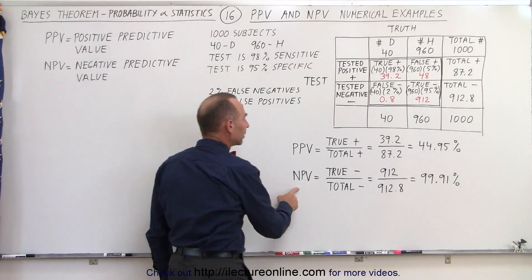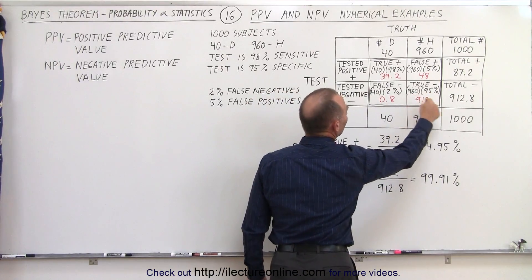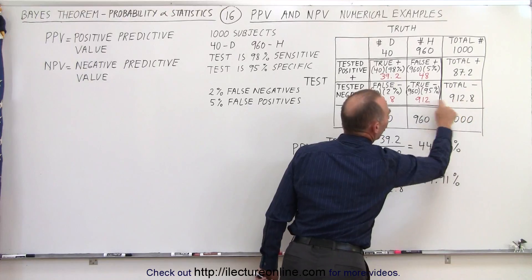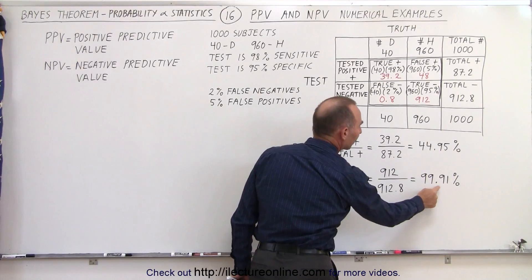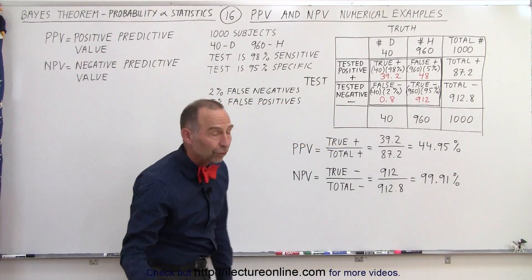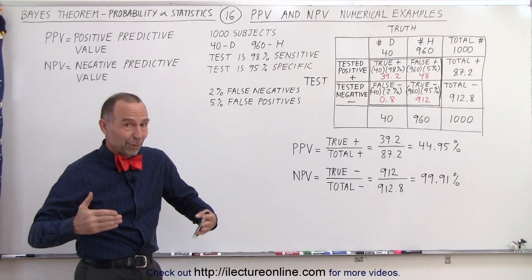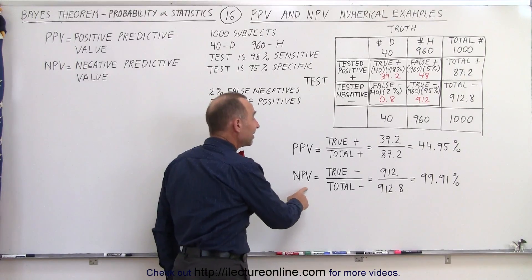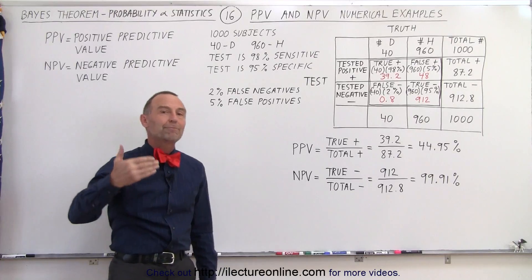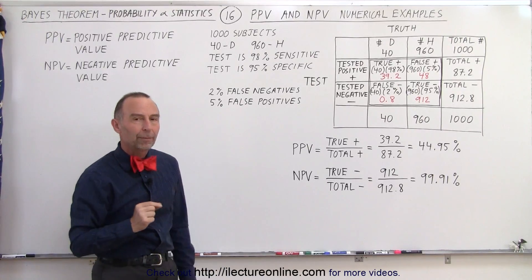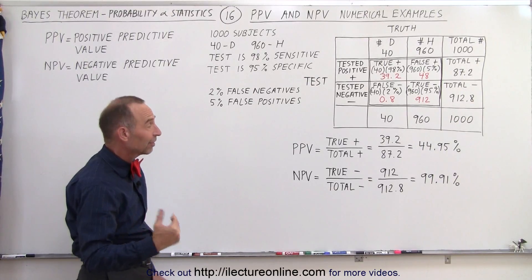The negative predicted value is the true negatives divided by the total negatives. Notice they're almost the same number, so when we divide the true negatives by the total negatives we get a value very close to 1 — very close to 100%, which is exactly what we want. If you test negative, you don't want to actually be positive. So if you tested negative, you have a 99.91% probability that you actually are negative, which is really good. There's a very small probability that you will be positive if you tested negative — that's what you want.